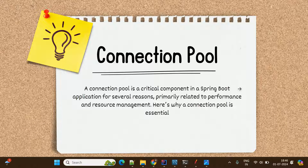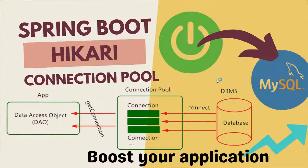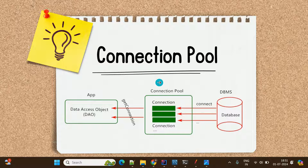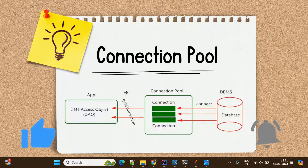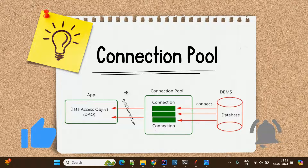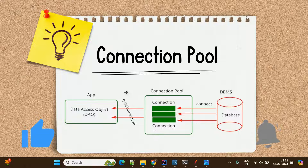Connection pool is a critical component in Spring Boot applications. If you observe this diagram, here is my application and here is the database. If we are not using any connection pool in your Spring Boot applications, whenever a request is made for data, it will establish a new database connection for each user request, which will impact your application performance.